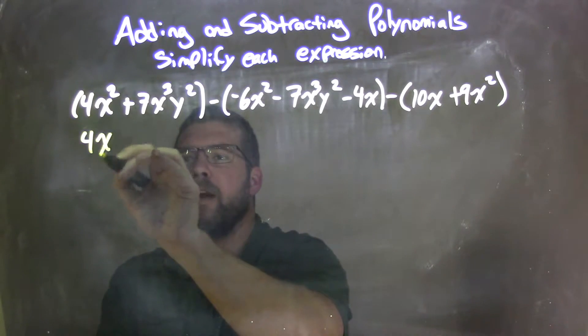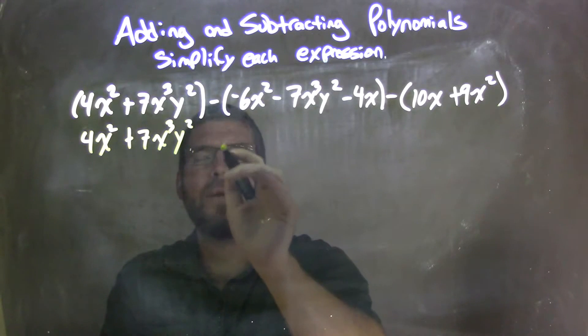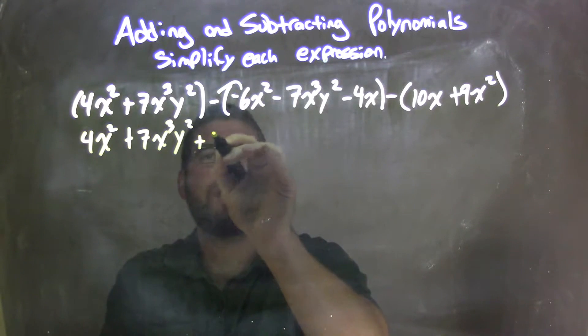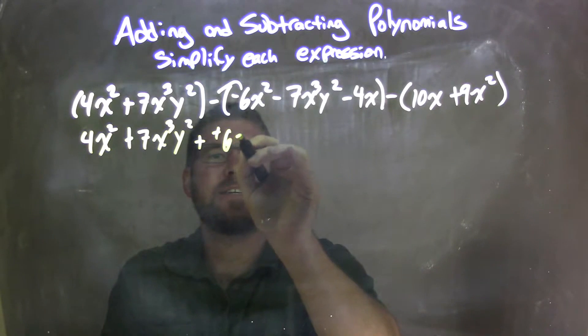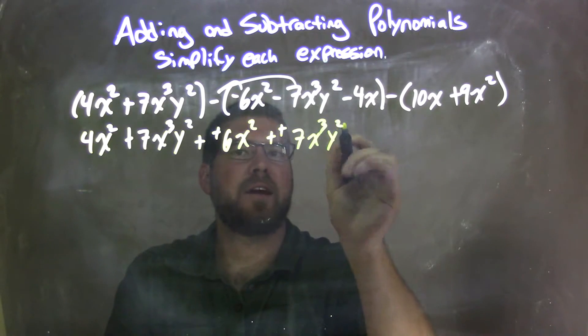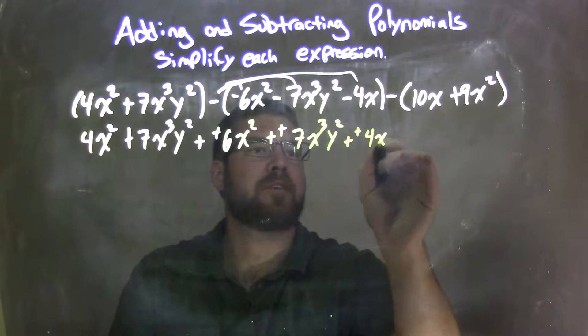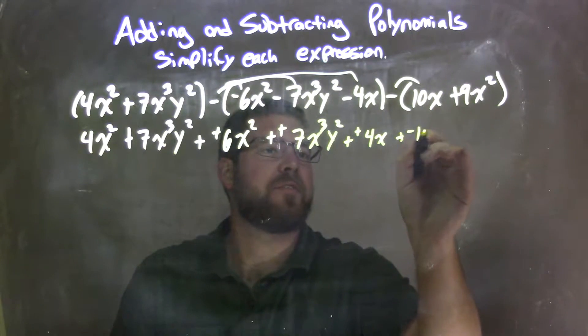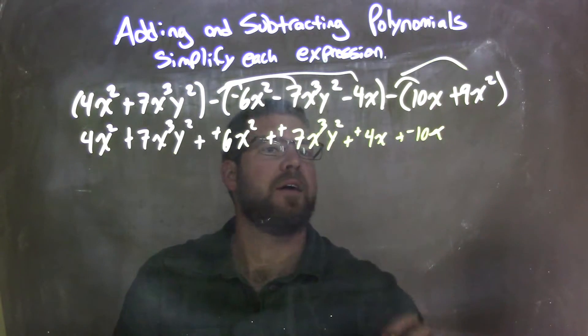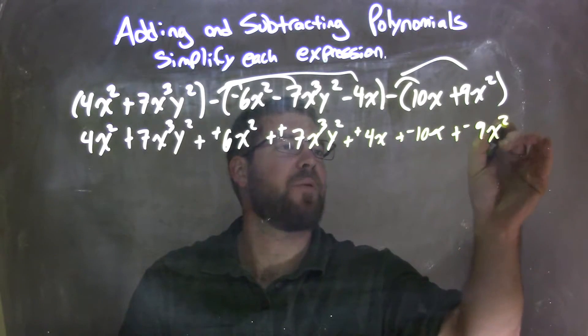Here, there's no negatives, so we have 4x squared plus 7x to the third times y squared. Distribute that minus sign: plus positive 6x squared plus a positive 7x to the third y to the second. Here, plus a positive 4x. Now we distribute the next one: adding a negative 10x and then adding a negative 9x squared here.